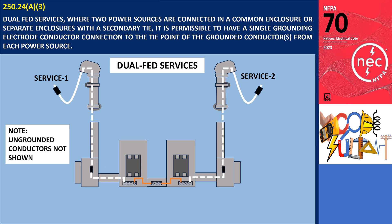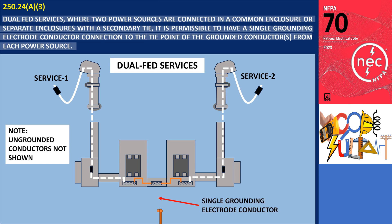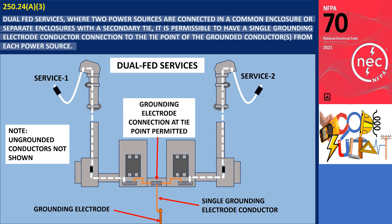According to Section 250.24(a)(3), in the case of dual-fed services — where two power sources are connected in a common enclosure or separate enclosures with a secondary tie — it is permissible to have a single grounding electrode conductor connection to the tie point of the grounded conductor from each power source. In the depicted illustration of a dual-fed system with secondary tie points, a single grounding electrode conductor is connected to the tie point of the grounded conductor for each power source.